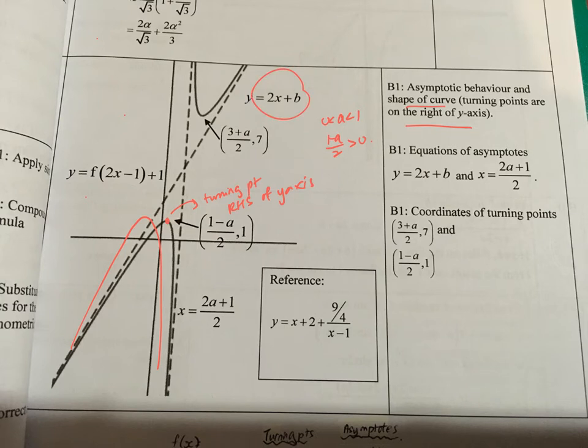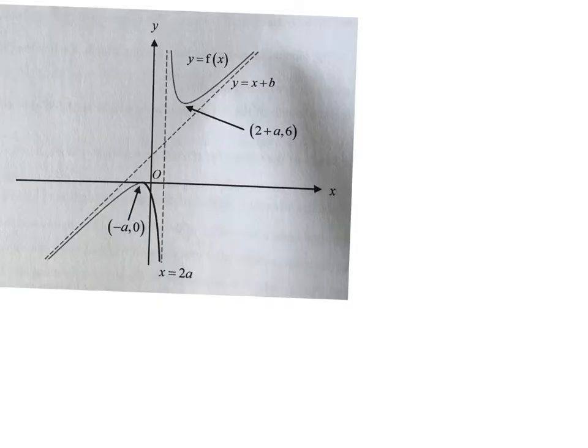Do take note: this is how the graph will look. There are 3 marks total — 1 mark for the correct asymptotes (if you only got one correct, you don't get the mark), 1 mark for asymptotic behavior, and 1 mark for the turning points. If you're not sure how to get the turning point, just try to do it step by step.